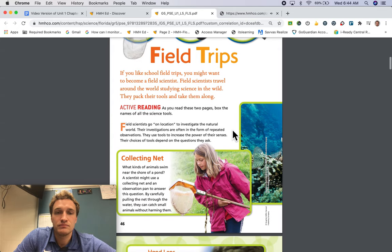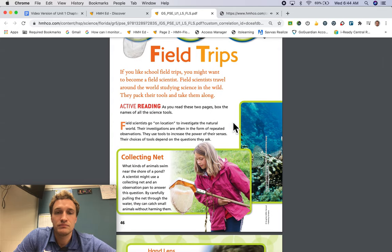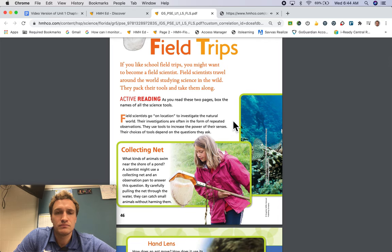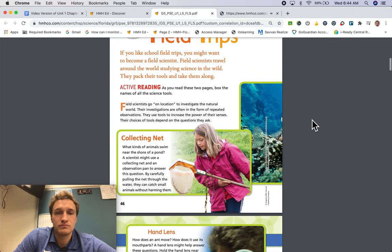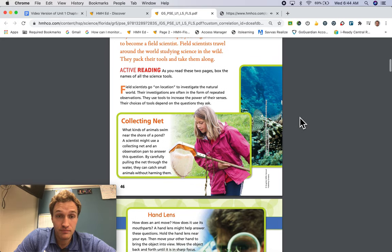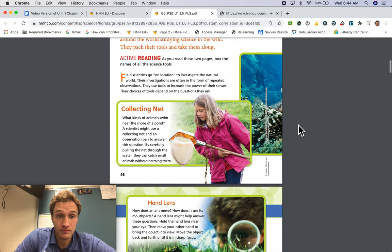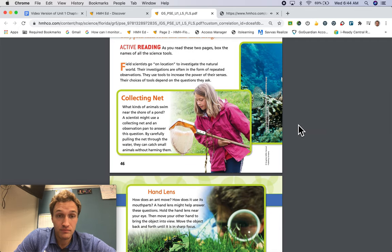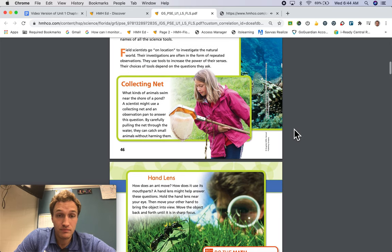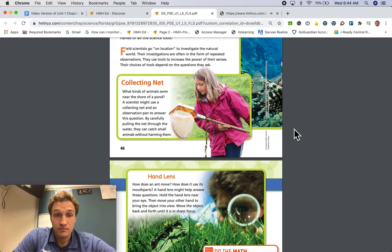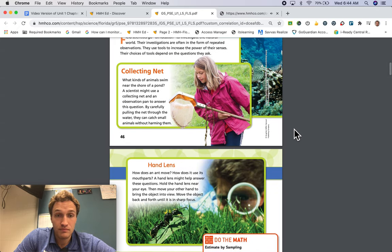Field scientists go on location to investigate the natural world. Their investigations are often in the form of repeated observations. They use tools to increase the power of their senses. Their choices of tools depend on the questions they ask. Collecting net. What kinds of animals swim near the shore of a pond? A scientist might use a collecting net and an observation pan to answer this question. By carefully pulling the net through the water, they can catch small animals without harming them.